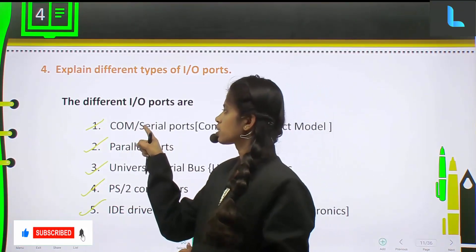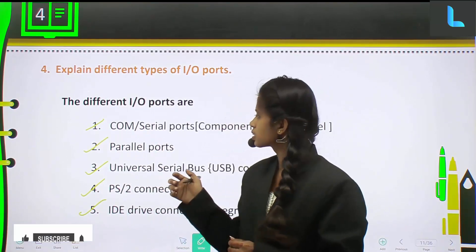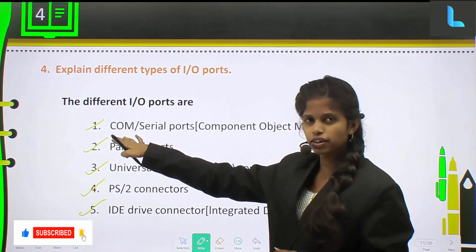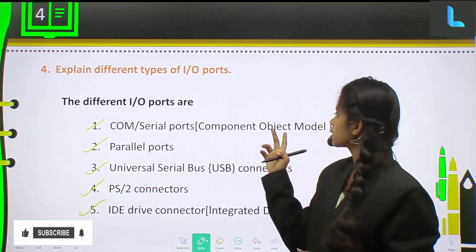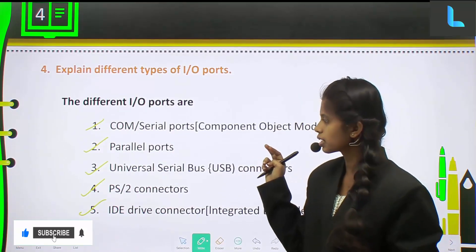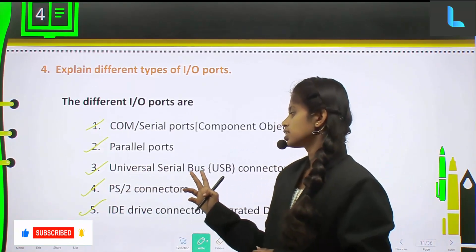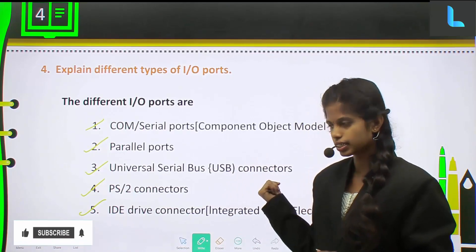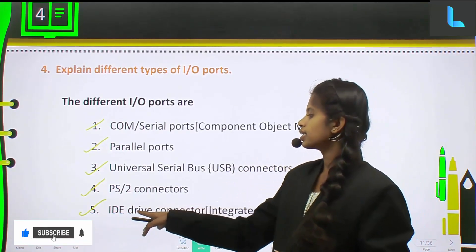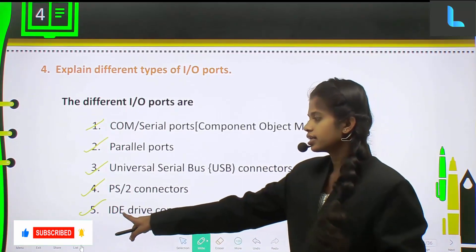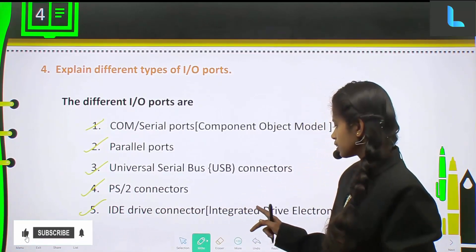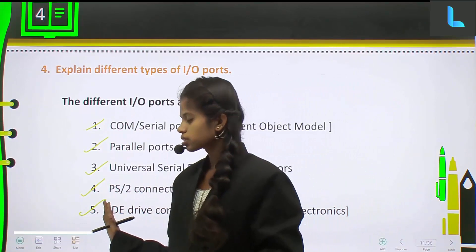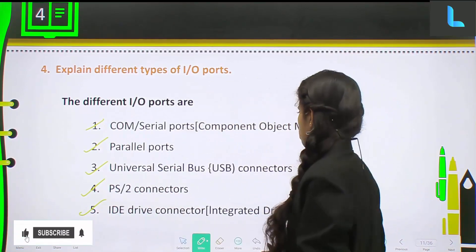COM, or serial port, is also called Component Object Model — COM is an abbreviation of Component Object Model. Similarly, USB stands for Universal Serial Bus. You have IDE drive connectors as well; IDE stands for Integrated Drive Electronics. So there are a total of five ports, and we will explain each of them now.